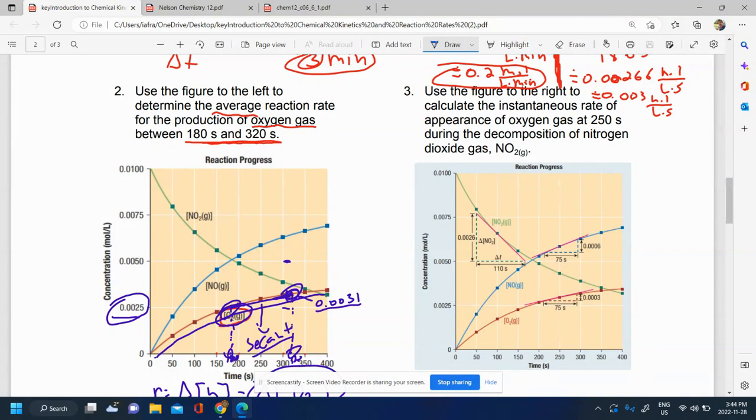So in this question, we want to know the instantaneous rate of appearance of oxygen at 250 seconds during the decomposition of nitrogen dioxide gas. So we have to choose a proper curve as usual. And here we have our curve, the oxygen curve,